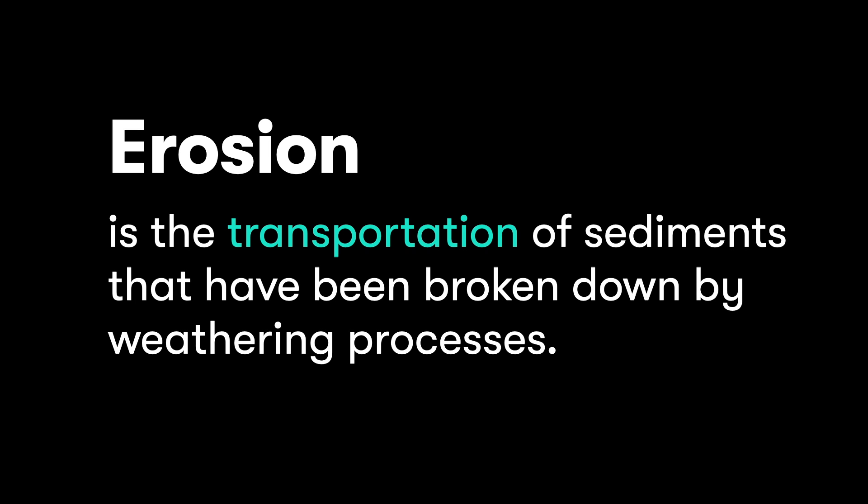Erosion happens next. This is the transportation of sediments — little chunks of rock — that have already been broken down by weathering processes. Once that big boulder of granite has been broken into smaller chunks by the waves, it is then transported or moved from point A to point B. That movement can be caused by any number of things: little chunks being bounced along in the bed of a stream, dragged along by a glacier, or simply falling downhill because of gravity, which is what we're going to look at today.